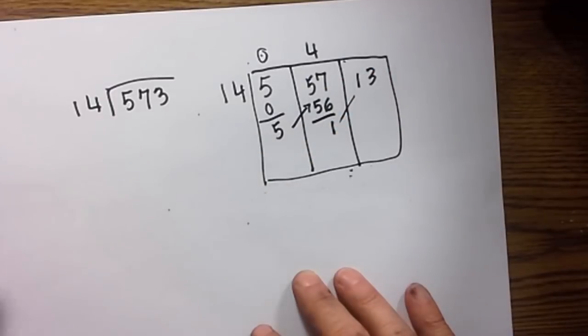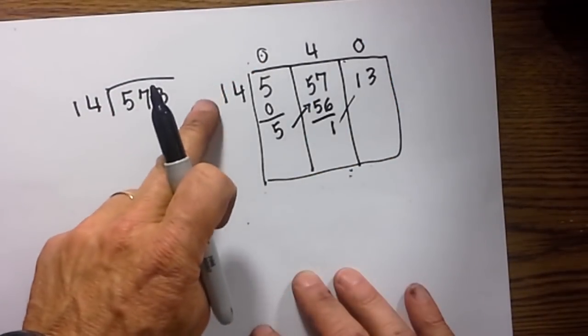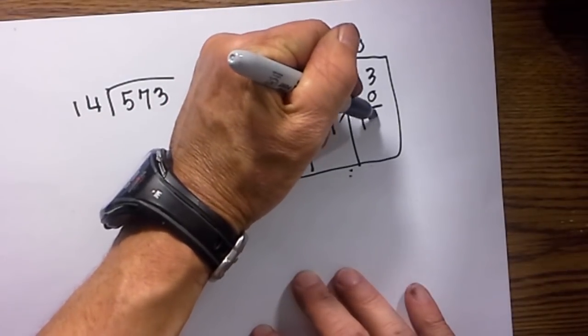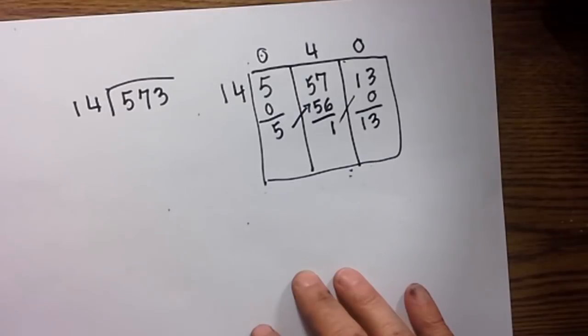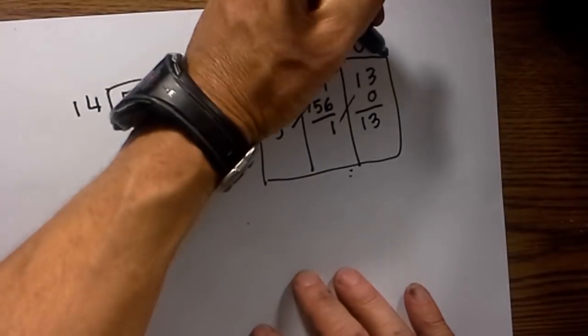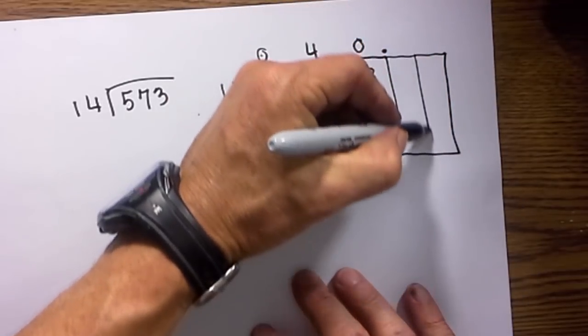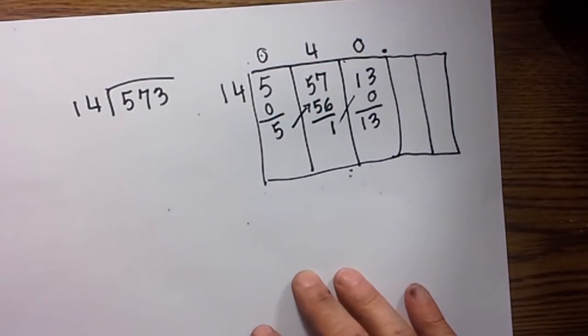The 14 is larger than the 13, so we put a zero. Zero times 14 is zero. So we have a remainder of 13, but I will not go with that. I will go out two decimal places. Again, you can go out as many as you need to, but let's just go two decimal places.